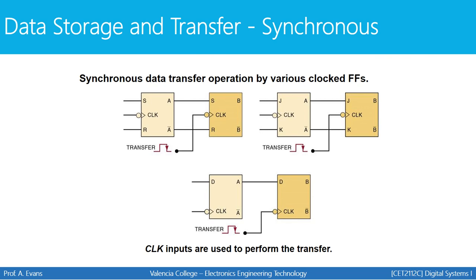Here are some examples of how data transfer happens synchronously with different types of flip-flops: the SR flip-flop, the JK flip-flop, and the D flip-flop. With each clock transition, the data stored in one flip-flop is transferred to the next. The S input of the second flip-flop is connected to the output of the first, so once the first flip-flop has made its output, that output is available as an input to the second. When the clock transitions, that input transfers to the output. All three flip-flop types can be used for data transfer or storage.